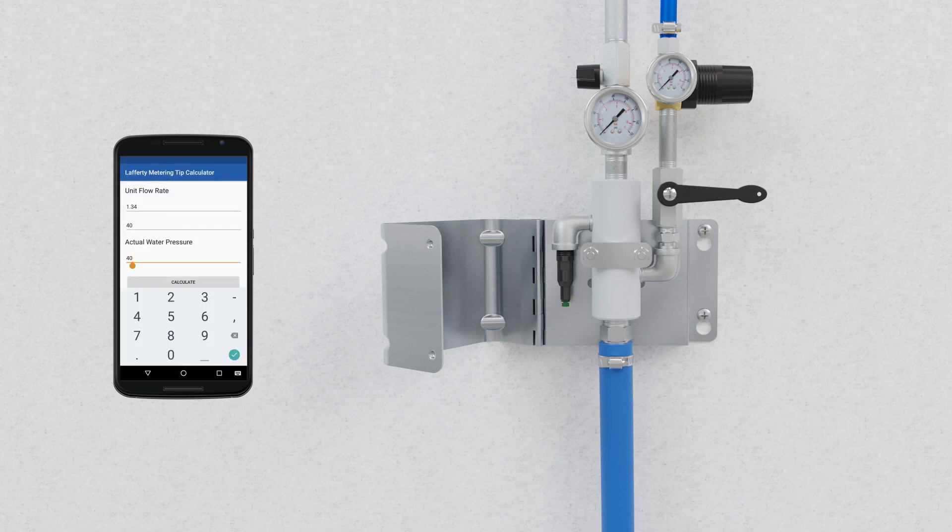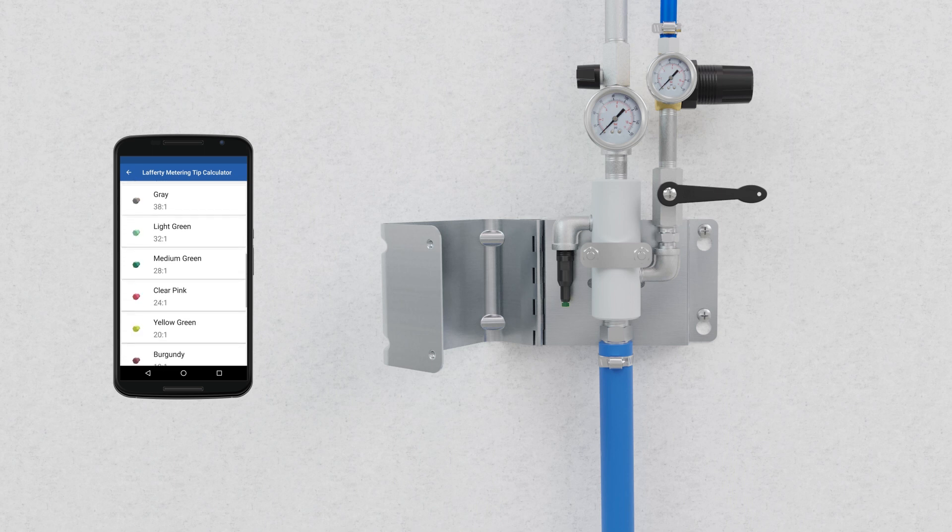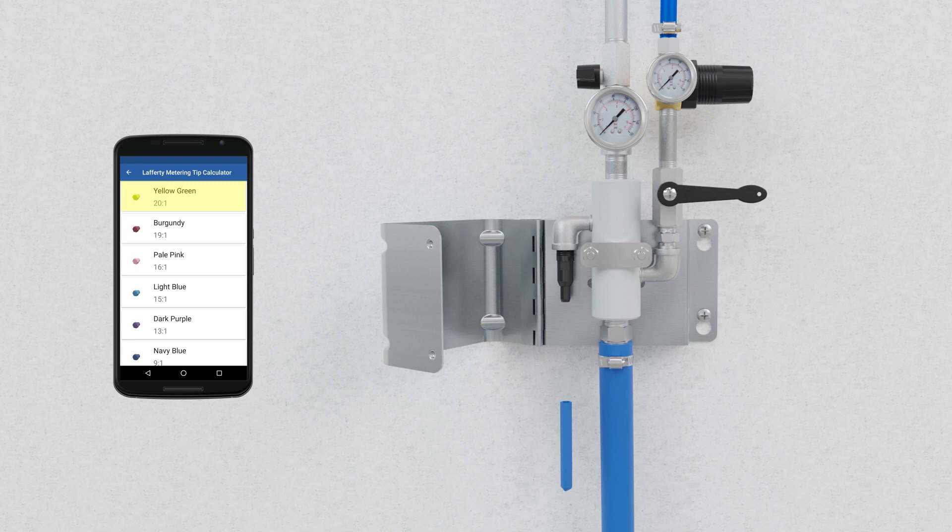If the incoming water pressure gauge had indicated an actual water pressure of 70 psi, we could instead enter that value for our actual water pressure using the same flow rate as before. For an incoming water pressure of 70 psi, we will need to install the yellow-green metering tip to achieve the same dilution ratio of 20 to 1.